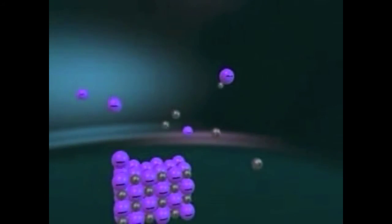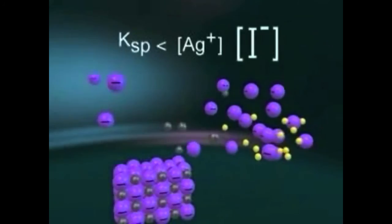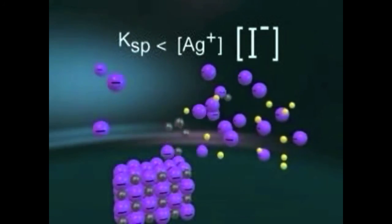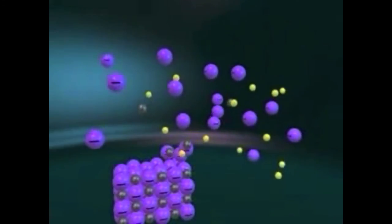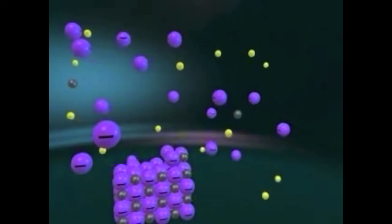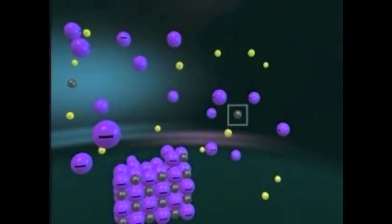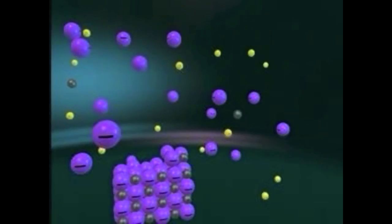The silver and iodide ions are of equal concentration in the solution. When sodium iodide, a soluble salt, is added, the concentration of iodide ion is greatly increased. This means that the product of the silver and iodide concentrations exceeds the solubility product constant. Because the product of the ion concentrations exceeds Ksp, additional solid silver iodide forms until the product of the iodide and silver ion concentrations again equals Ksp. At equilibrium, the silver ion concentration is much smaller than the iodide concentration. The addition of sodium iodide, which greatly enlarges the concentration of one of the ions in the solubility equilibrium, has reduced the solubility of silver iodide. This reduction in solubility is an example of the common ion effect.